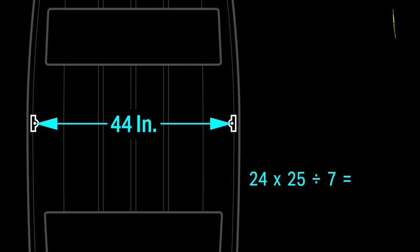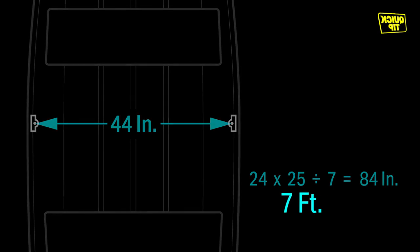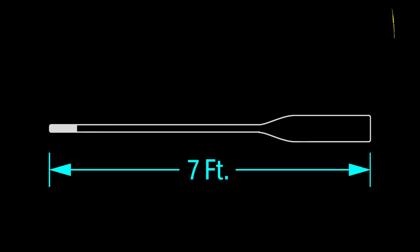Then if I multiply 24 by 25, then divide by seven, I get 85 inches and change. Rounded down to the nearest six inch increment is 84 inches or seven feet. So now I know that a pair of seven foot long oars will work for my john boat.